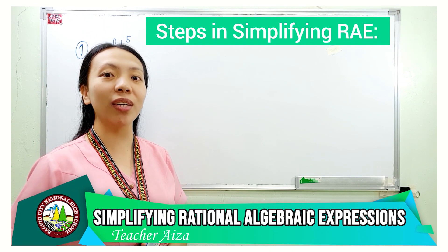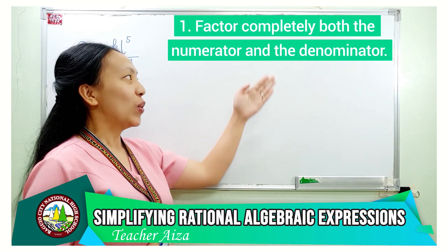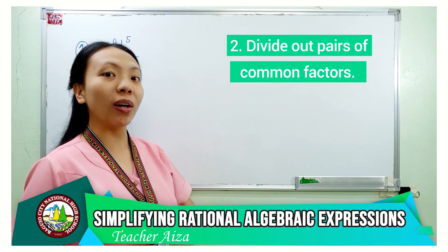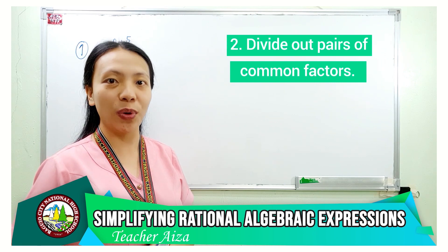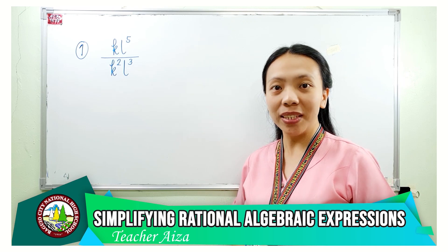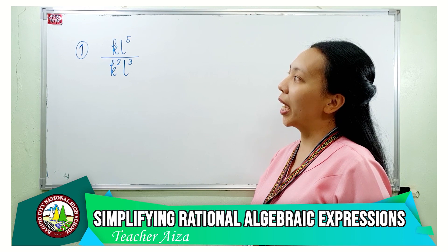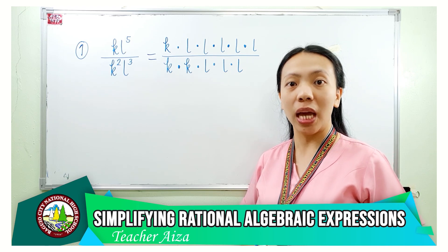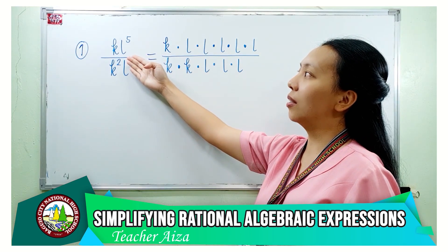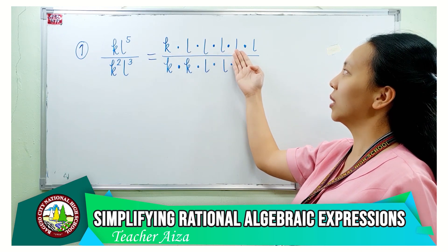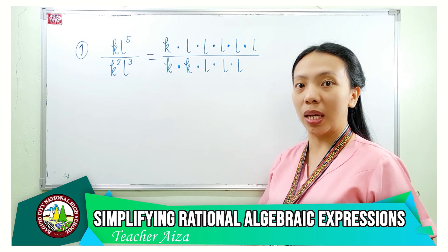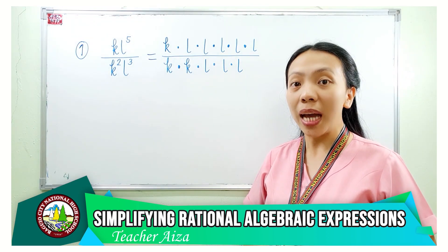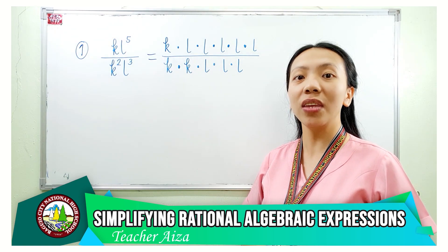Here are the steps in simplifying rational algebraic expressions. First, factor completely both the numerator and the denominator. Second, divide out pairs of common factors — one from the numerator and the denominator. Let us now apply these steps in the expression kl raised to 5 over k squared l cubed. First step: factor completely both the numerator and the denominator. The complete factorization of kl raised to 5 is k times l times l times l times l times l.